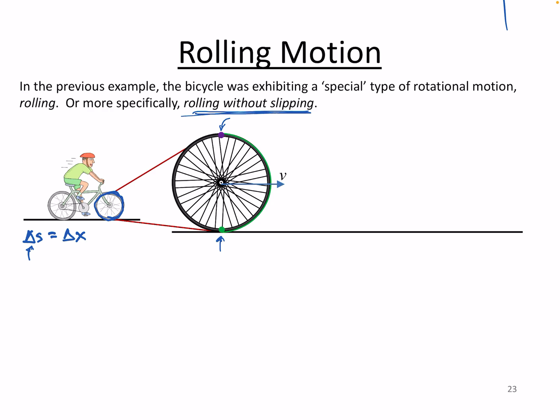That means the purple dot — if we're rotating in this direction and the purple dot goes through half a rev — it's going to move down to the bottom of the wheel, and the green dot, like a little splotch of paint on the tire, will move up to the top. One half rev: they go around 180 degrees and flip positions.